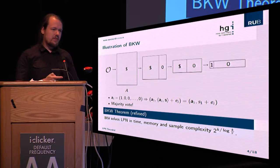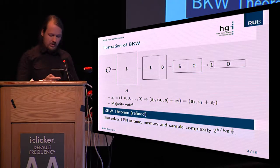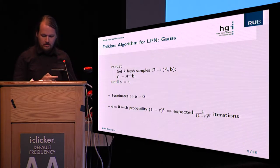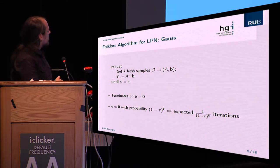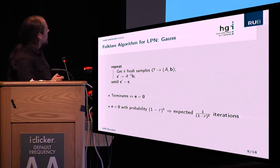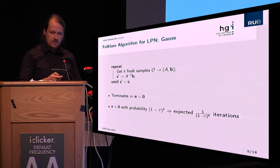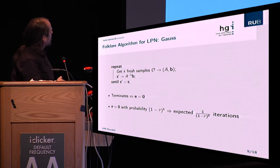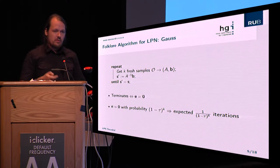To tackle BKW's drawbacks, let's look at another very easy and well-known algorithm we call Gauss. It simply gets k samples from the oracle, giving us a square matrix A. Assuming no error happened — that all error bits e_i are zero — you would solve directly for the correct s and the algorithm terminates. But usually errors will happen when you draw k samples, so we have to repeat.